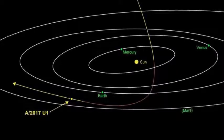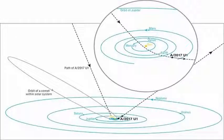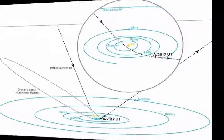This unusual object, by now designated A-2017 U1, is less than a quarter of a mile, 400 meters in diameter, and moves remarkably fast.